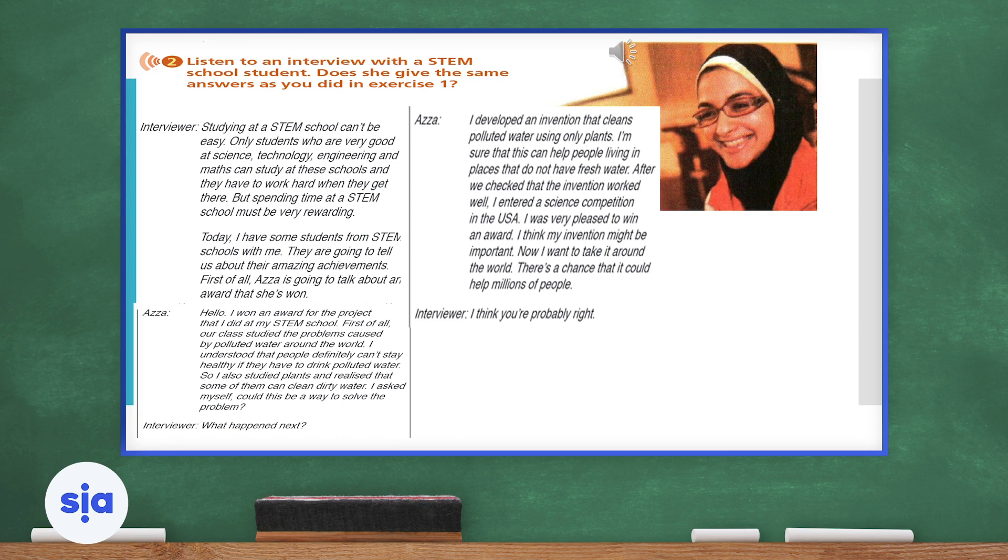What happened next? I developed an invention that cleans polluted water using only plants. I'm sure that this can help people living in places that do not have fresh water. After we checked that the invention worked well, I entered a science competition in the USA. I was very pleased to win an award. I think my invention might be important. Now I want to take it around the world. There's a chance that it could help millions of people. I think you're probably right.